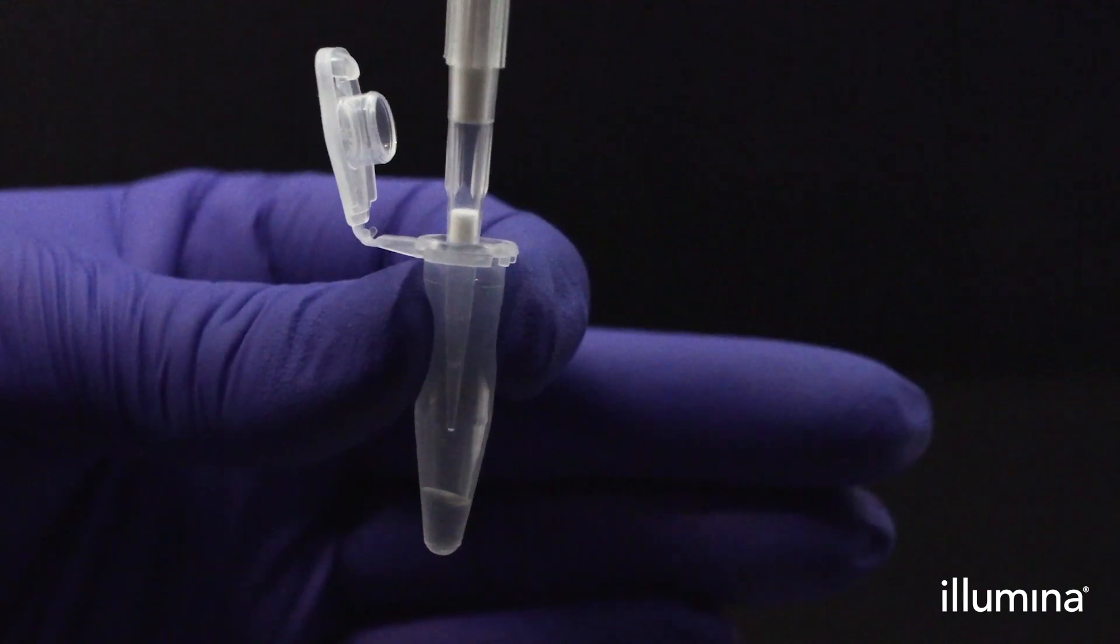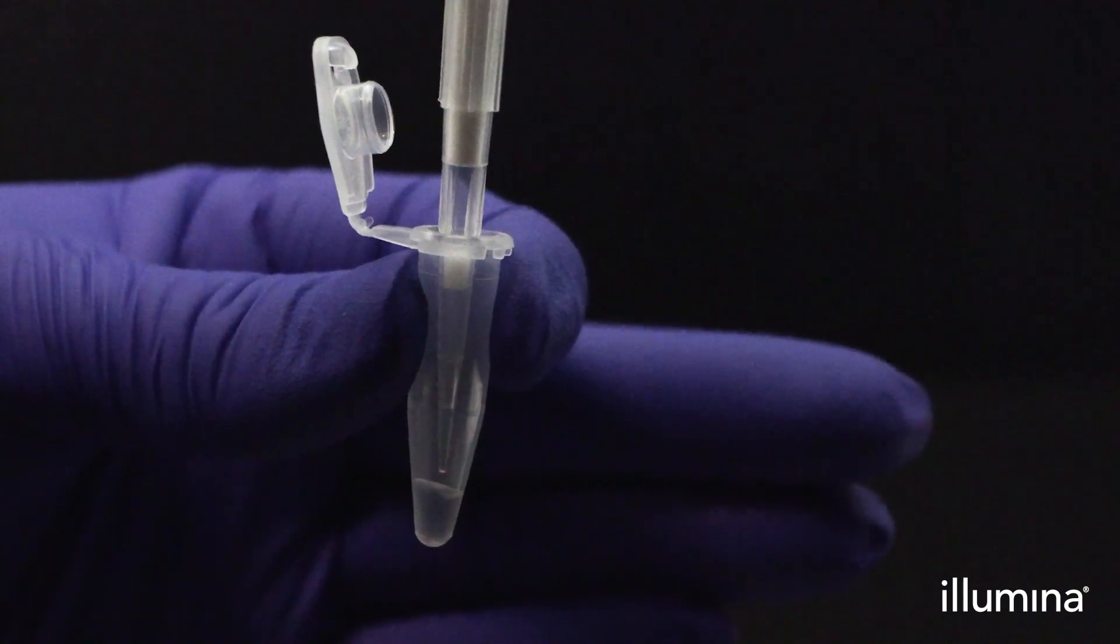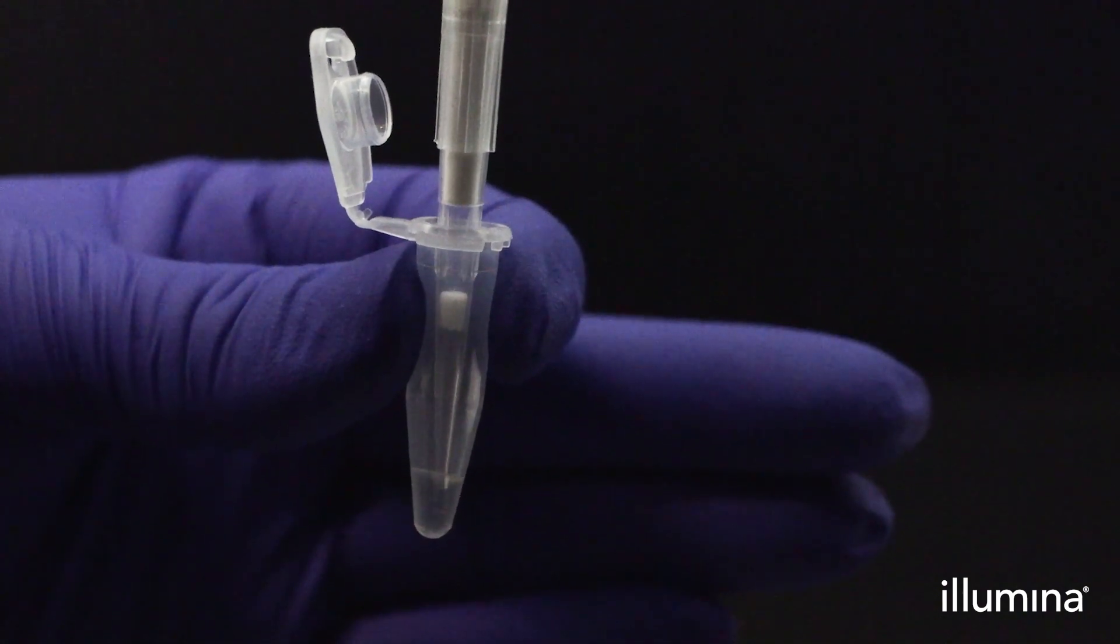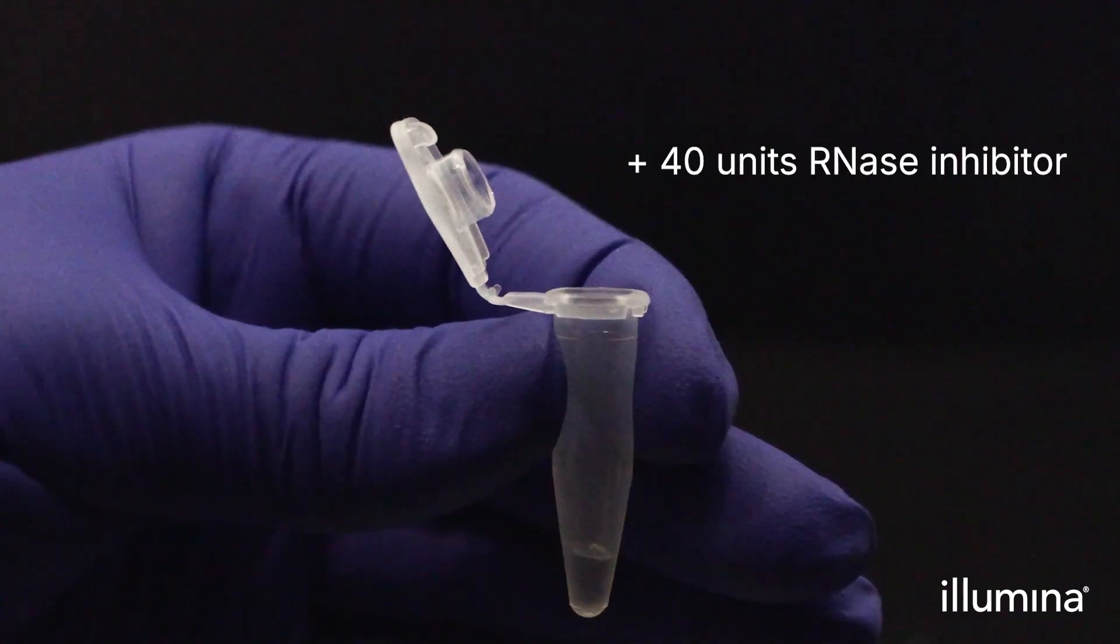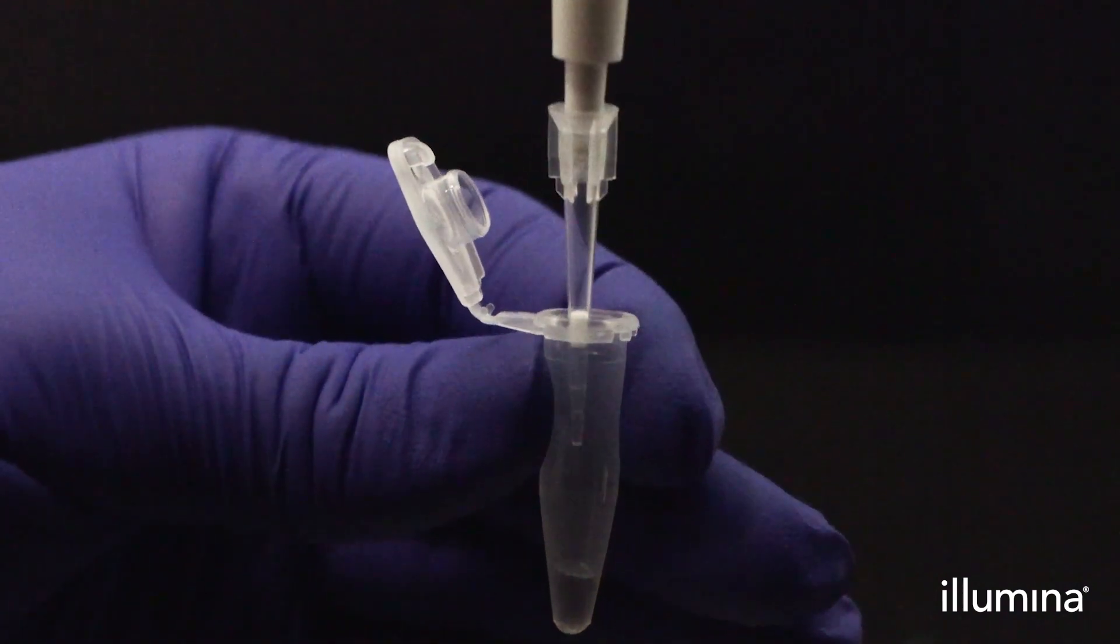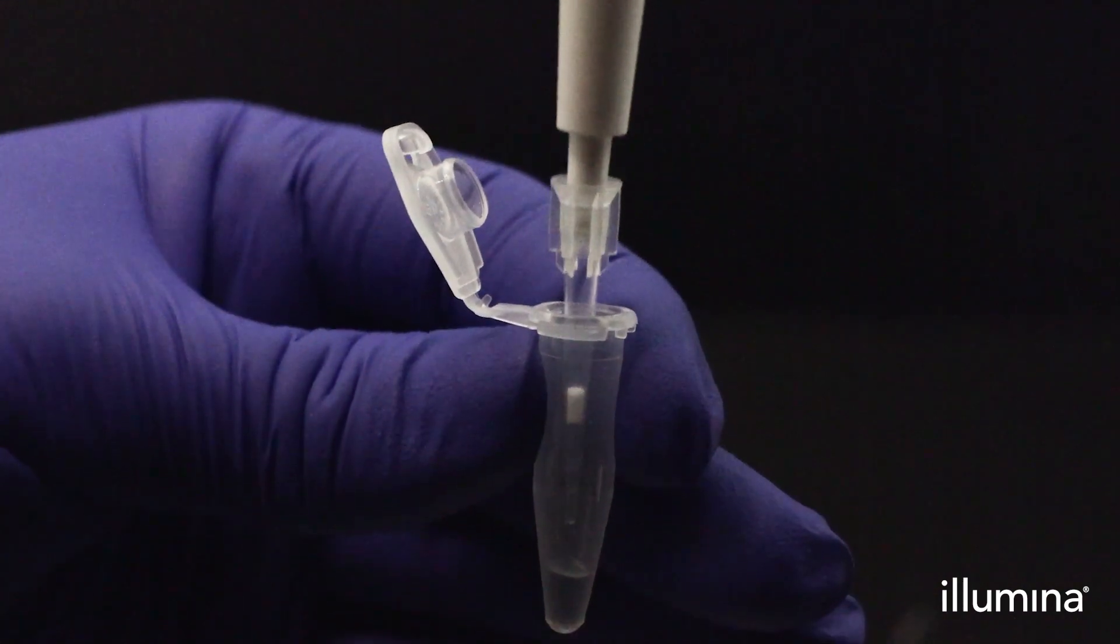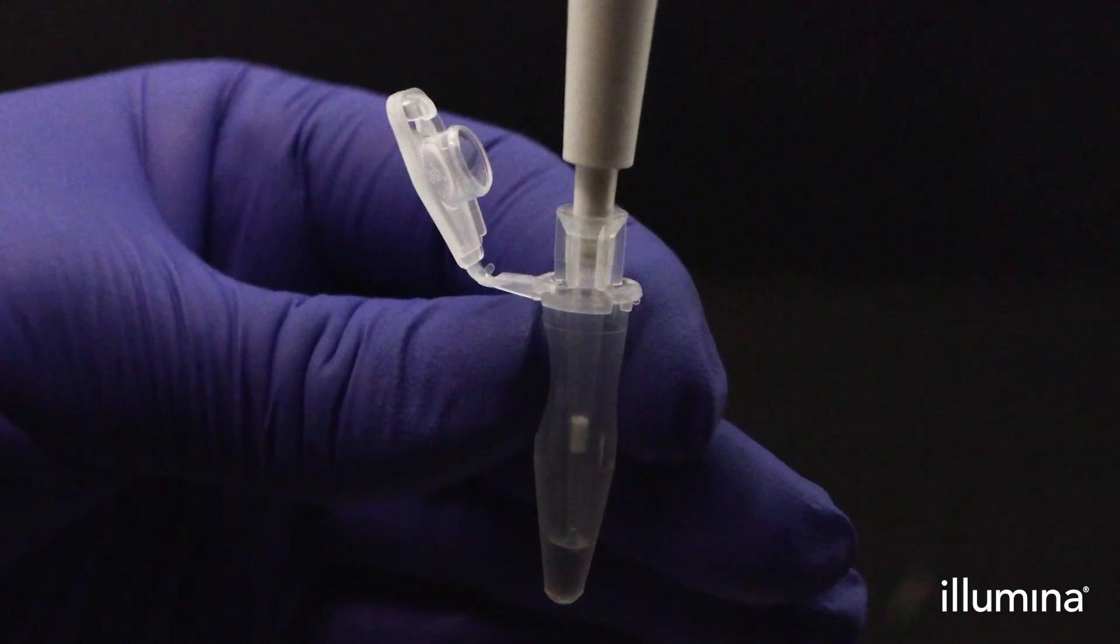Next, add 4 microliters of your freshly mixed sample plus 40 units of RNase inhibitor directly into the pips. Ensure cells or nuclei are dispensed into the pips layer, not just on the surface of the pips.